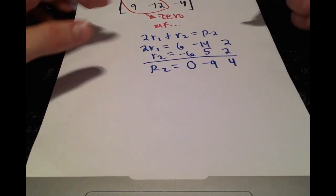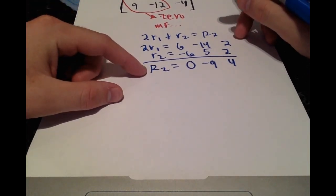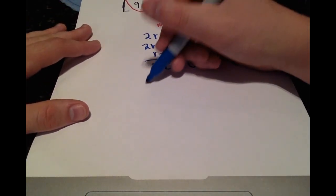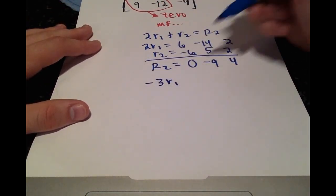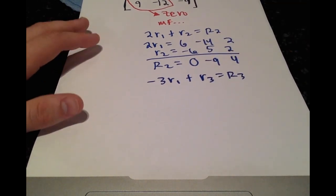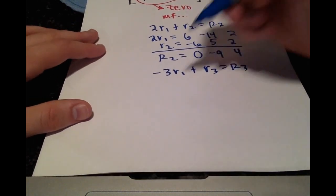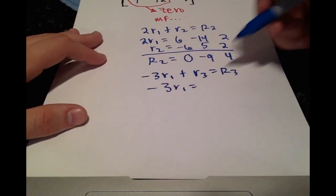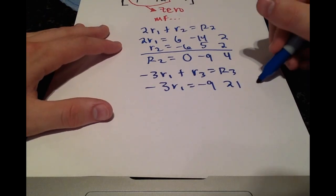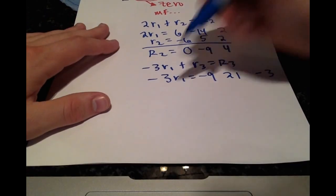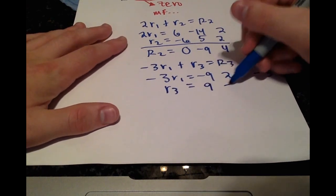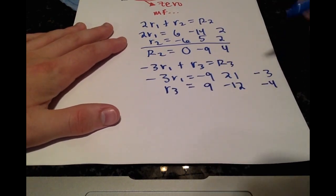And we can go ahead and also perform the other step to get that other 0. So that's going to be negative 3 times row 1 plus row 3, which will give us our new row 3. And writing all of that out step by step, we have negative 9, 21, negative 3. And then row 3 is 9, negative 12, negative 4.